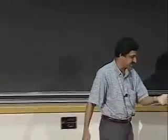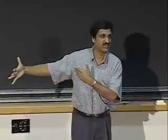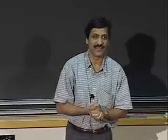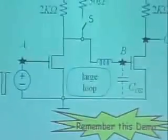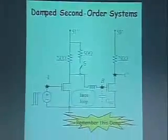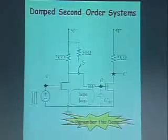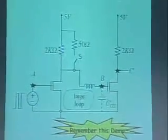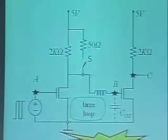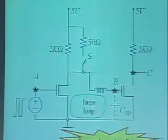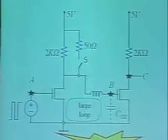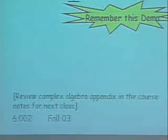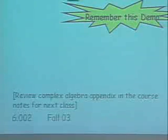Let me spend the next five minutes reviewing how we got here. The first ten view graphs are going to blast through where we are in terms of LC and RLC circuits. For Tuesday's lecture it would help if you quickly reviewed the appendix on complex algebra in the course notes — remember all the real and imaginary J omega stuff. It is a couple of pages. So remember this demo.